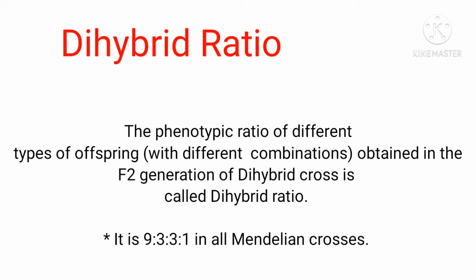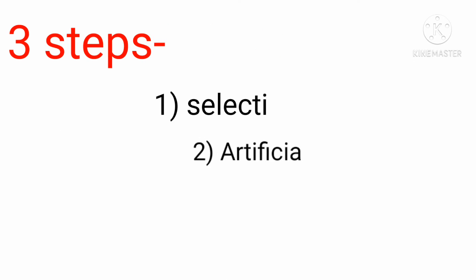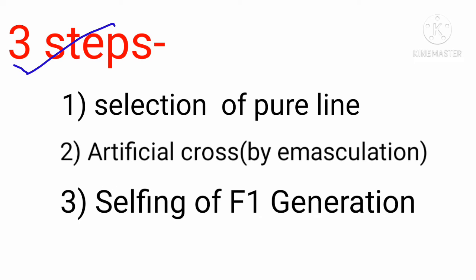Mendel performed many dihybrid crosses with different combinations, and every time he got the same result — the same pattern of ratio in the F2 generation. From this, he established the principle of independent assortment. He followed the same three steps as in the monohybrid cross, a classical experimental design that was followed by many breeders after him and led to the discovery of different gene interactions.